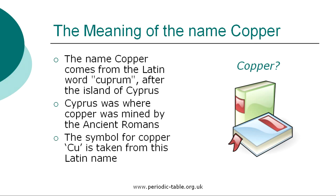The Romans believed that Venus rose from the waters of Cyprus, looking at herself in a copper mirror. The association between copper and the goddess led to the belief that copper would attract love and protect against evil.